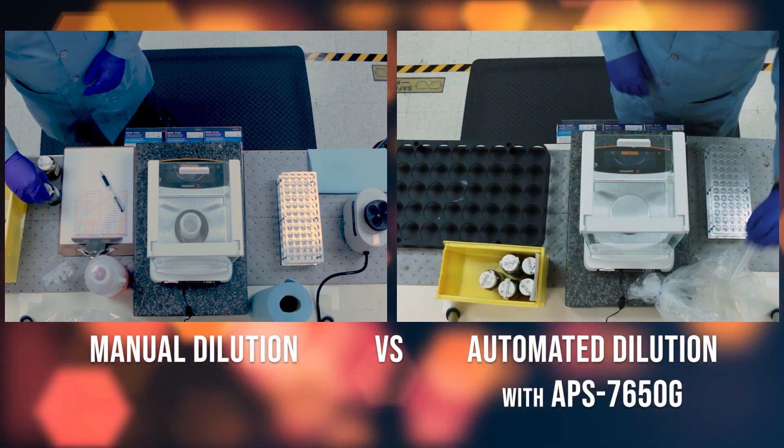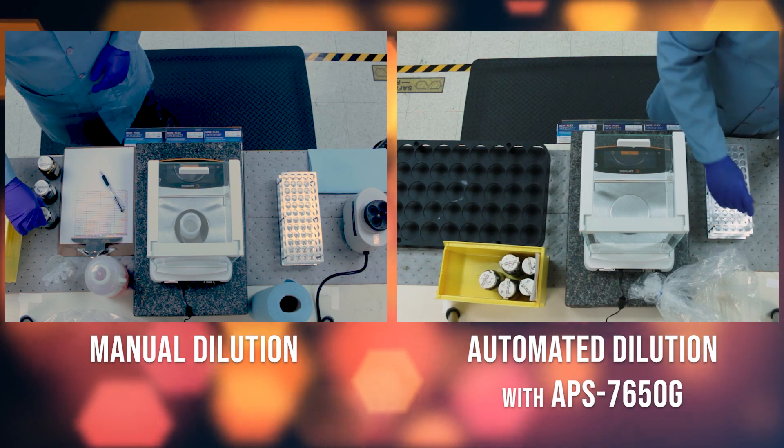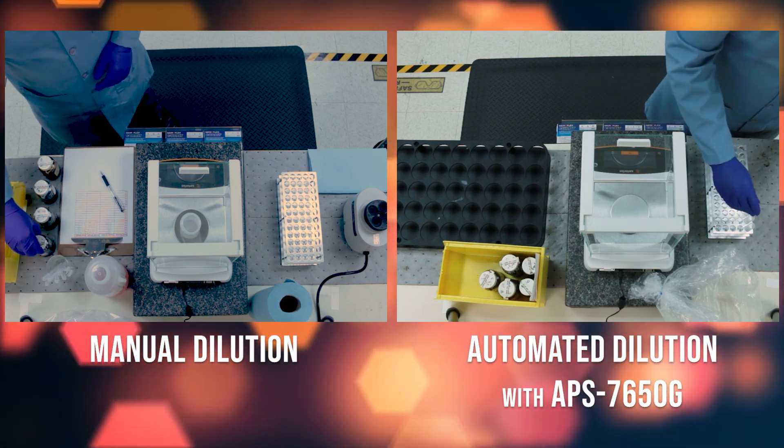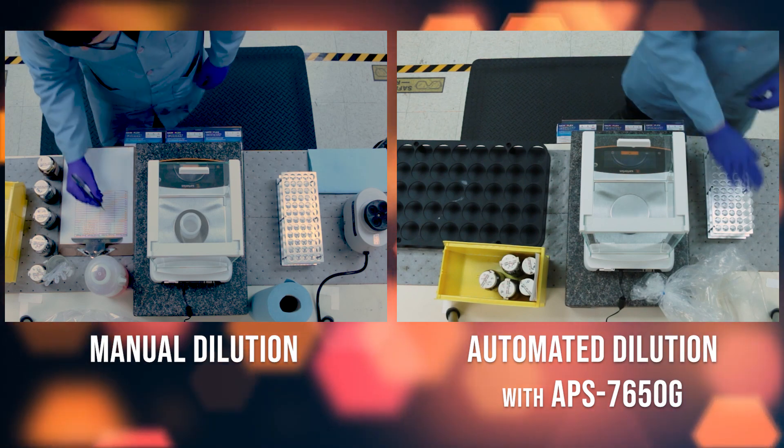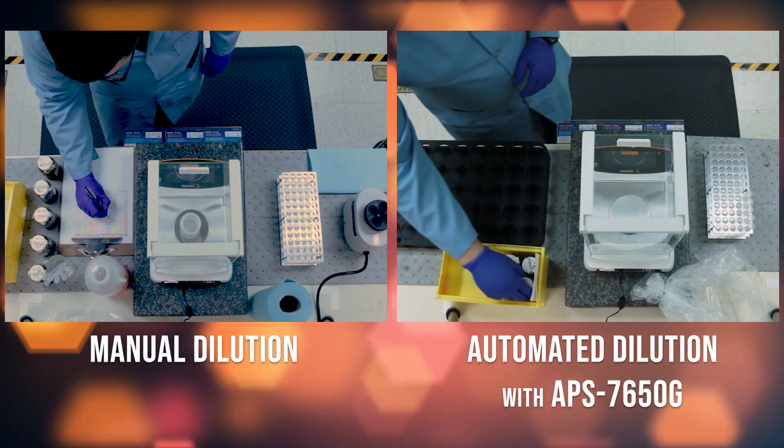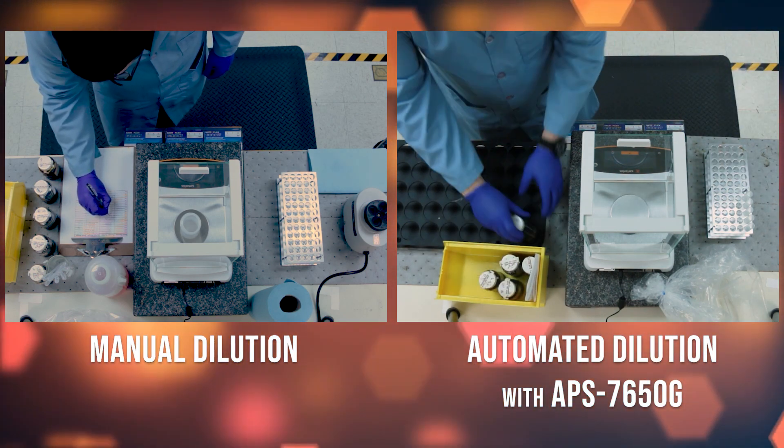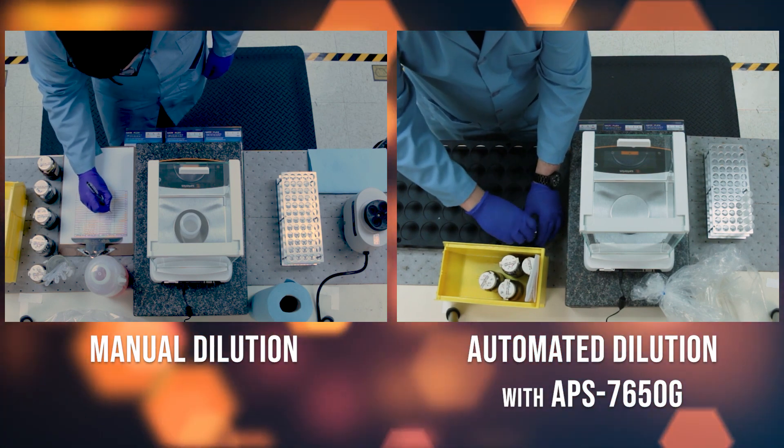On the left he's preparing them manually and on the right he has the APS 7650G Automated Gravimetric Sample Preparation. The idea here is that you'll get to see exactly how much time he saves even across a batch of only five samples.